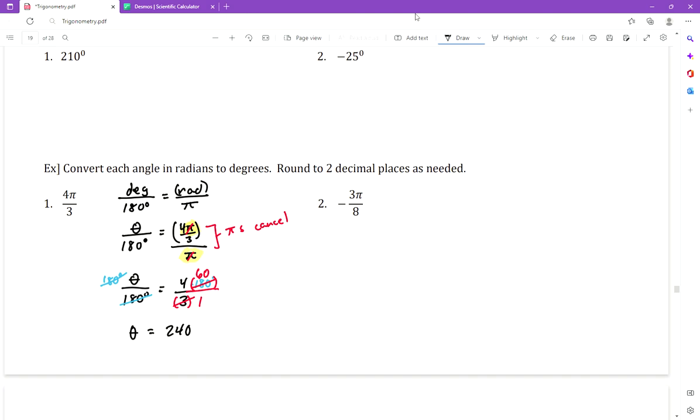I have a 1 in the denominator I don't really need to show, so this is 240 degrees. θ is 240 degrees. This one doesn't really need to be rounded.